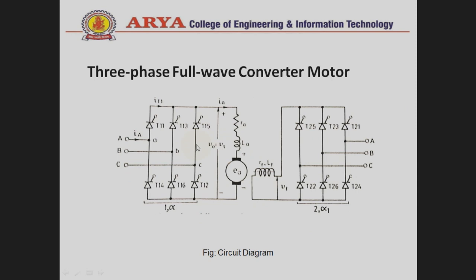The output voltage across the armature circuit depends on which phase has the highest input voltage at the crossover point — that phase voltage is available at the output terminal. If phase A and phase C voltages cross at the same point, whichever phase voltage is higher is available at the output.